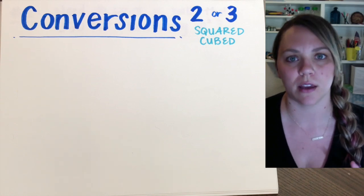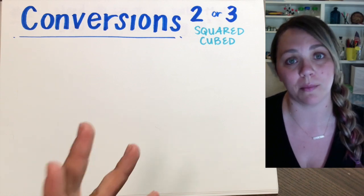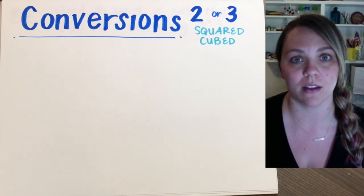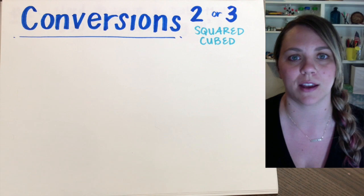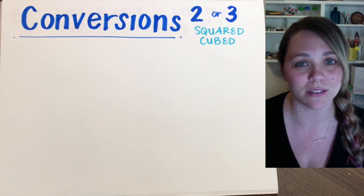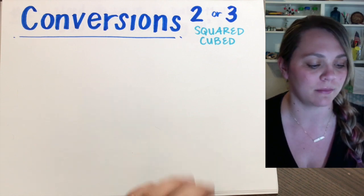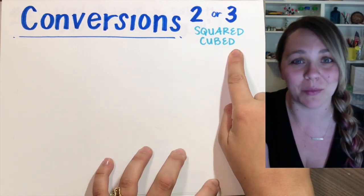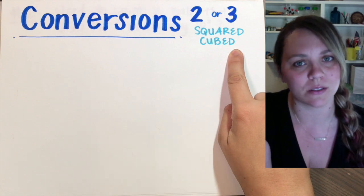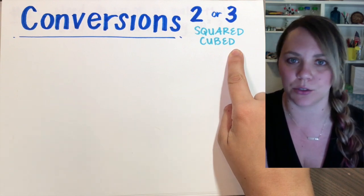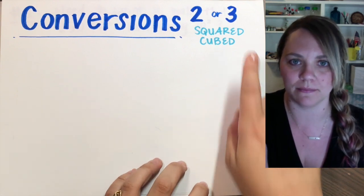In this video, we're going to look at more complex conversions — looking at conversions that have squared and cubed units. It makes it a little more difficult, but it's totally doable once you get the trick.